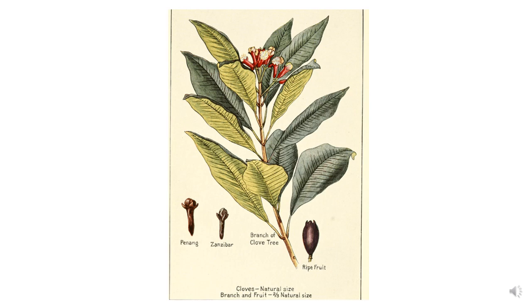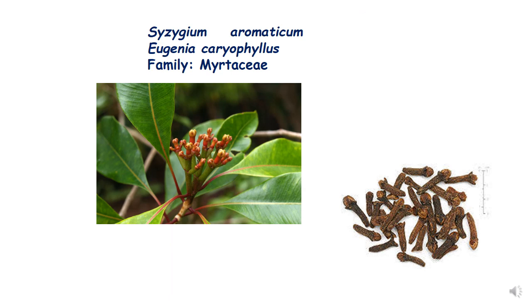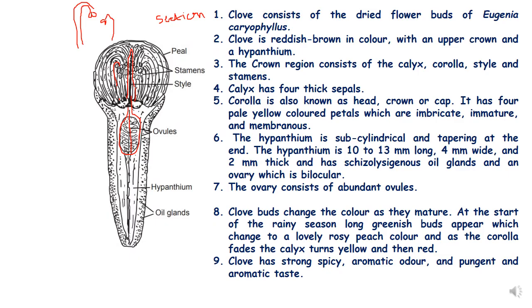This is a picture of a herbarium specimen of clove in picture form, so you can see the plant and the clove growing on the plant. Along with the plant you can see the cloves which you must have seen in your houses. This is a section of the plant — when you do sectioning you can make two halves of this clove.